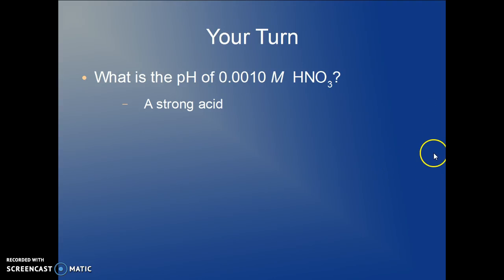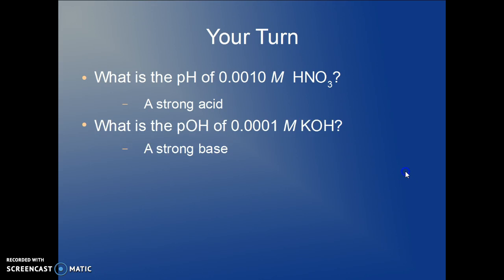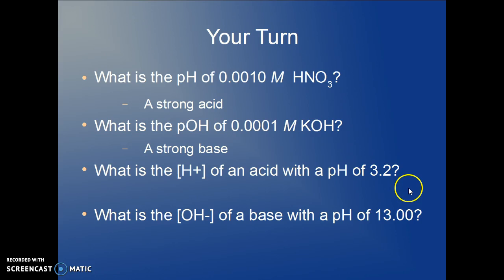So, your turn. What's the pH of the strong acid, 0.0010 molar nitric acid? Go ahead and figure that out. What's the pOH of 0.0001 molar potassium hydroxide, a strong base? What's the hydrogen ion concentration of an acid with a pH of 3.2? And what's the hydroxide concentration of a base with a pH of 13?